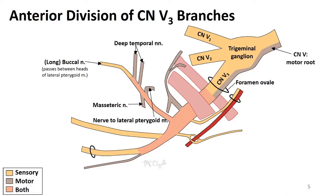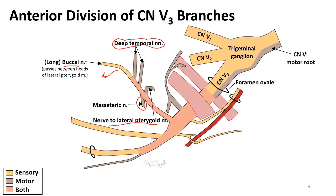The anterior division is another portion we've spoken about in terms of the muscles of mastication. Most branches coming off it are motor branches. We see the nerve to the lateral pterygoid, which may come off the main anterior trunk or later off the buccal nerve. We also see the masseteric nerve to the masseter and the deep temporal nerves to the temporalis muscle. After these motor branches, the remaining sensory branch is the long buccal or buccal nerve, which passes between the two heads of the lateral pterygoid muscle.